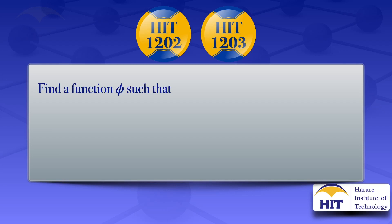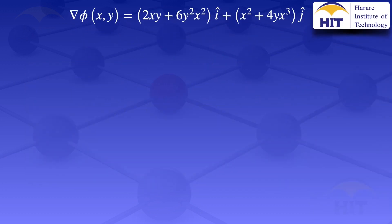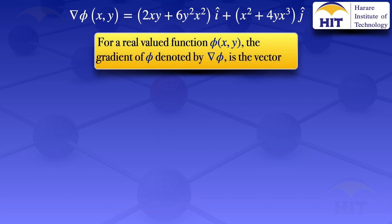In this tutorial, we are going to find the function φ such that grad φ(x,y) equals (2xy + 6y²x²)i + (x² + 4yx³)j. We know that the gradient of a scalar field φ is grad φ = (∂φ/∂x)i + (∂φ/∂y)j.